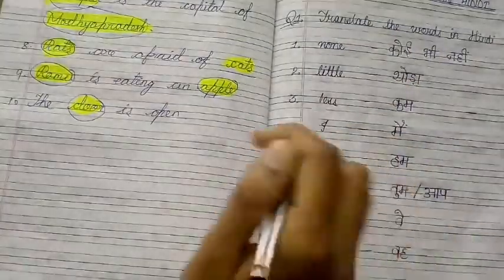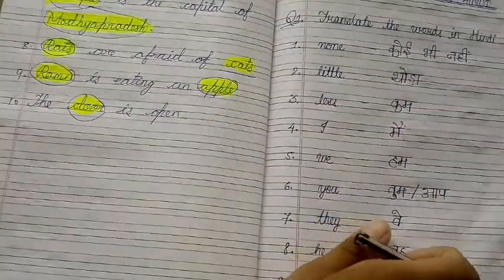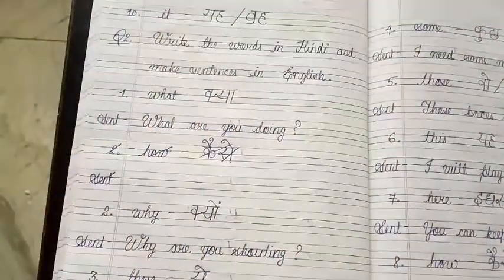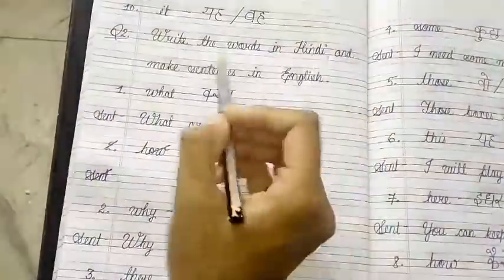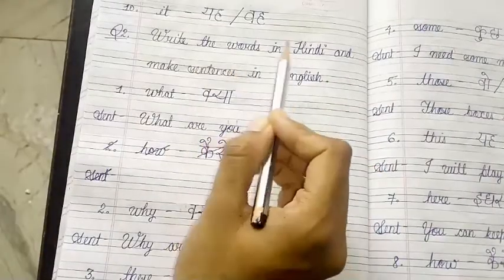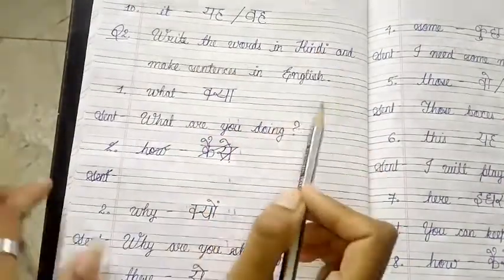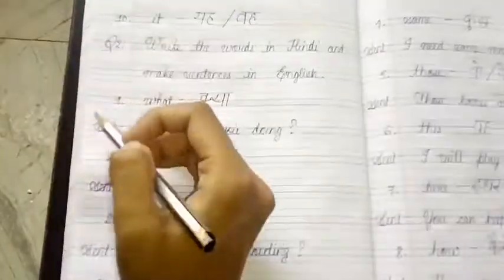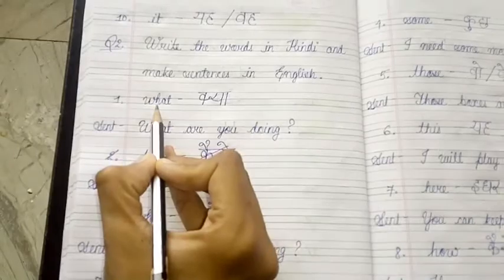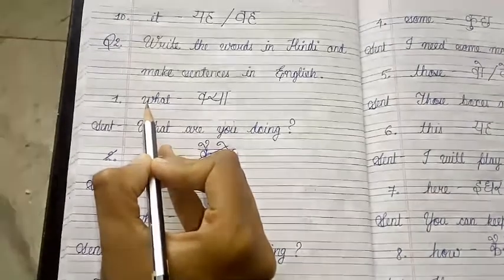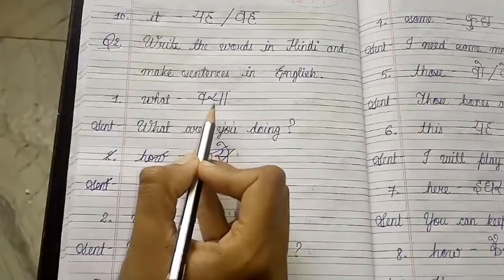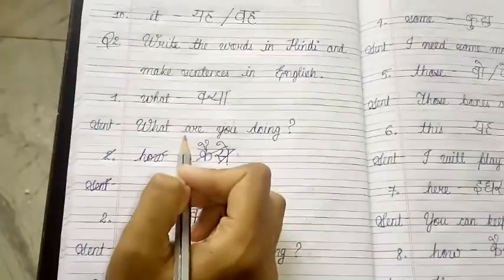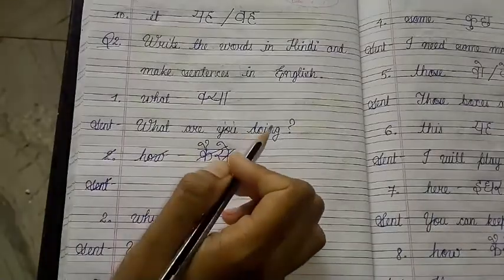There were ten words which you had to translate into Hindi, and those are the answers. Now the next question is: translate the words in Hindi and make sentences in English. We have to translate the words into Hindi and also make a sentence in English. The first word is 'what' — its translation is 'kya', and the sentence is: What are you doing?